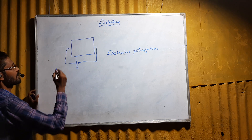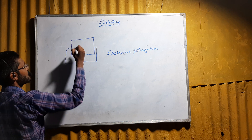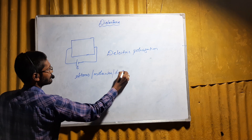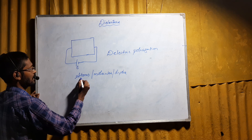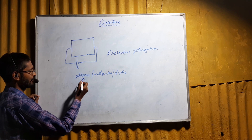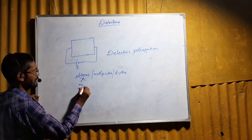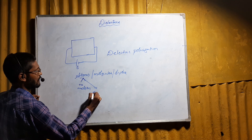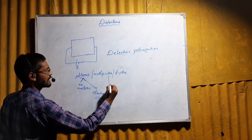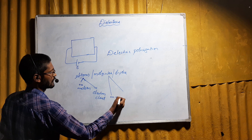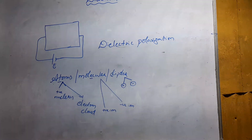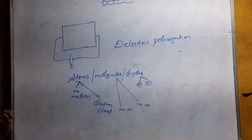Dielectric materials contain either atoms, molecules, or dipoles. An atom contains a positive nucleus at the center and an electron cloud surrounding this nucleus. A molecule contains a positive ion and negative ions. Dipoles contain opposite charges at each end.